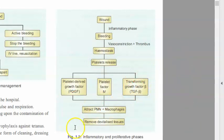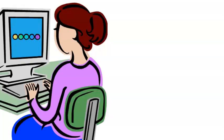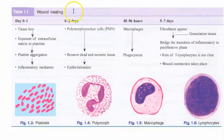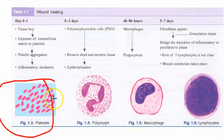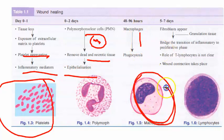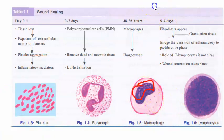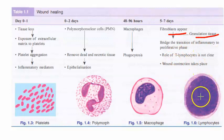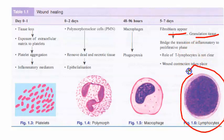If they ask you about phases of wound healing, remember these three extra things: platelet-derived growth factor, platelet factor 4, and transforming growth factor beta. Looking at the timeline table: day 0 to 2 involves platelet aggregation and inflammatory mediators. Then polymorphonuclear cells (neutrophils) come in with epithelialization. Then macrophages and phagocytosis follow. Fibroblasts then appear with granulation tissue — very important to mention in the exam. Wound contraction is also discussed.